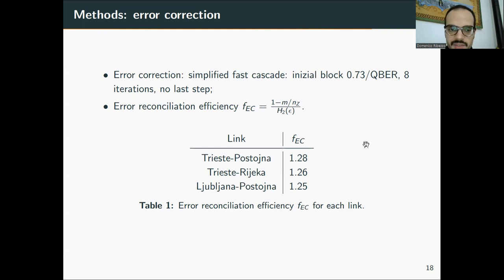And this parameter is defined as written here, and it has to be read as one is the perfect error correction, ideal error correction that doesn't lose anything, and the higher with respect to one the number is, the worse efficiency is the error correction. And we had in any cases error correction efficiency that went from 1.25 to 1.28.